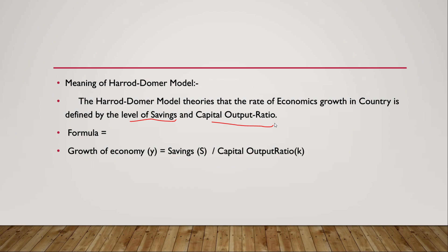The capital output ratio: for example, if our capital output ratio is 1 to 10, this means one unit of capital input produces 10 units of output.